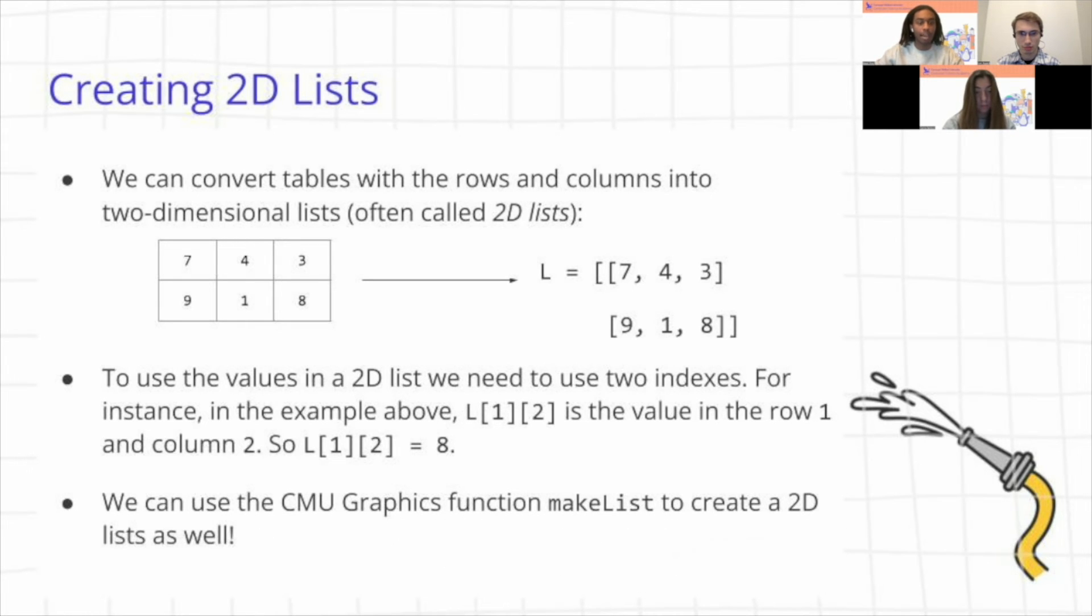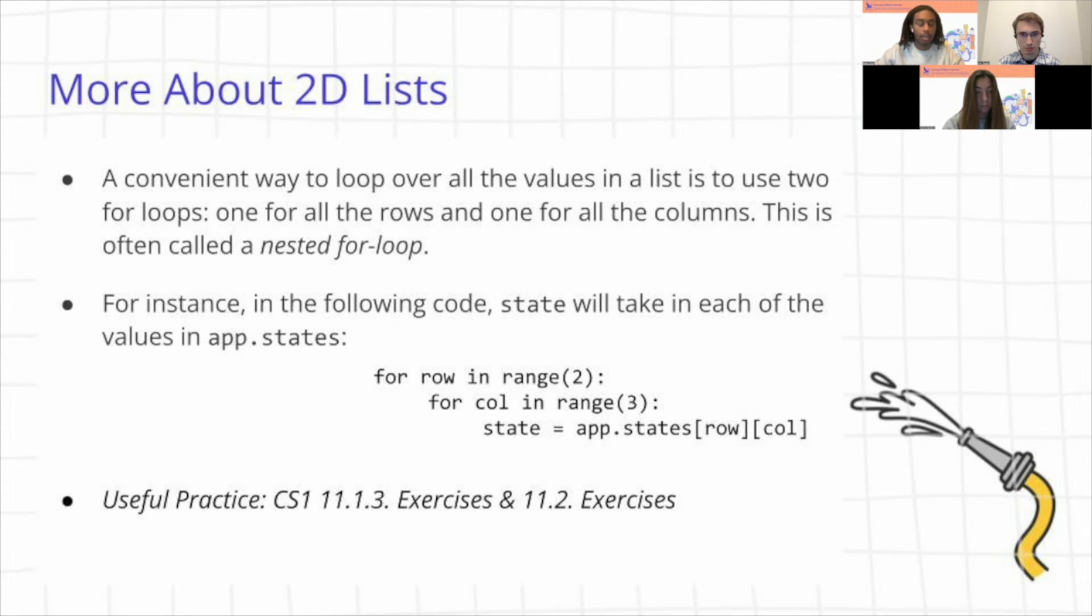And what we can do is actually use our same CMU graphics function, makeList, to create a 2D list as well. And makeList is really useful for when we need to create a 2D list first and then loop over the list. And it's sort of used for initializing instead of just creating our list like we normally do.